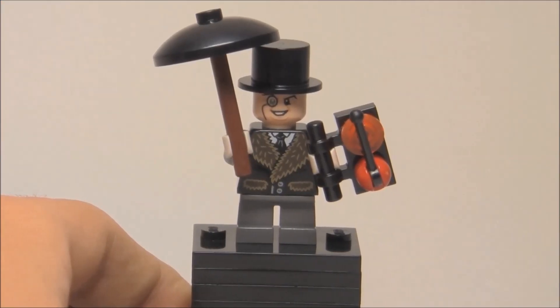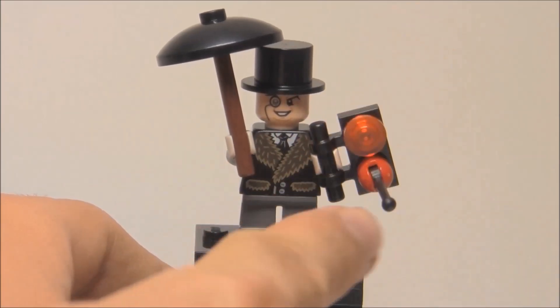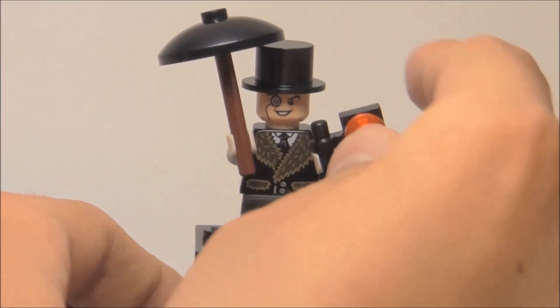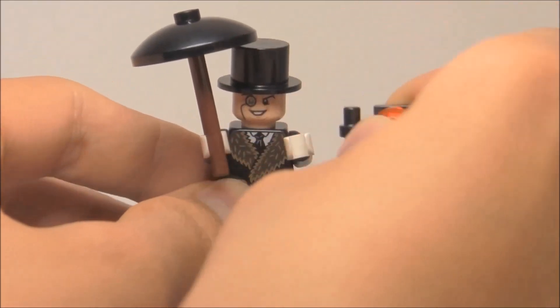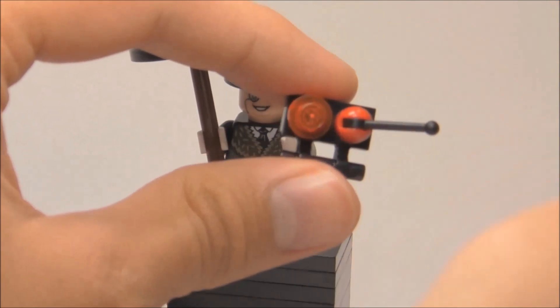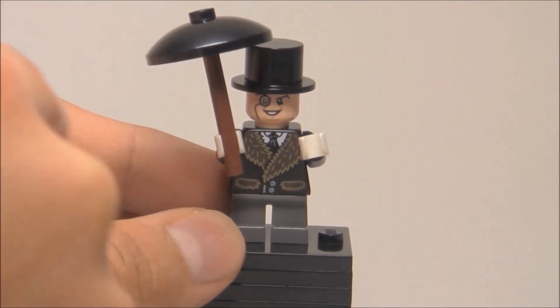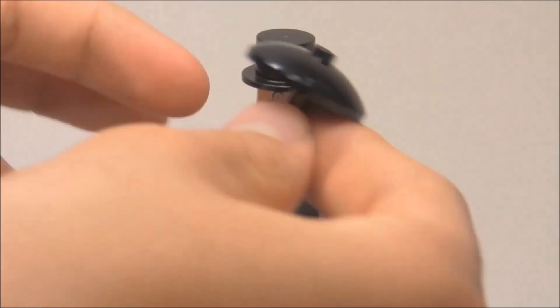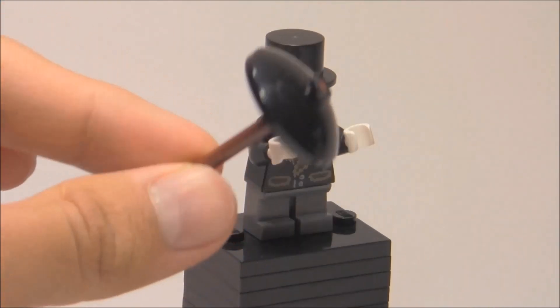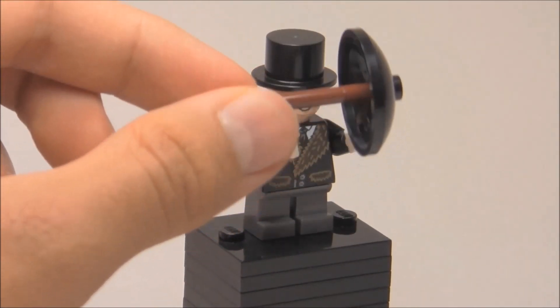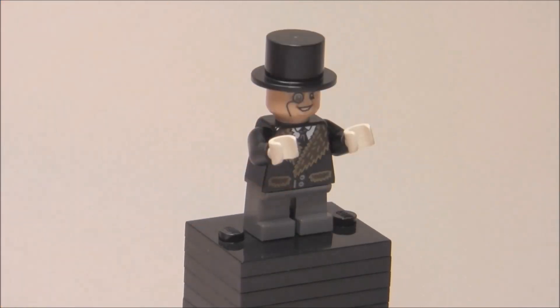Here is the Penguin. He has this little switch accessory using an antenna and a regular stud. You can just take that off, it's just a little added detail. He comes with his signature umbrella, which is a cool little build, but it doesn't have special pieces.